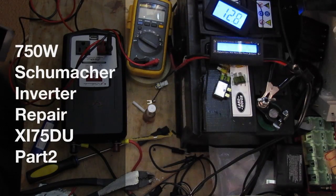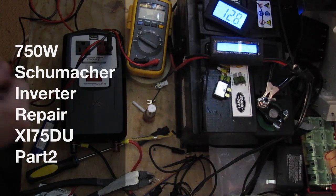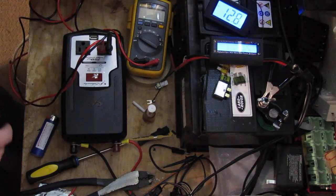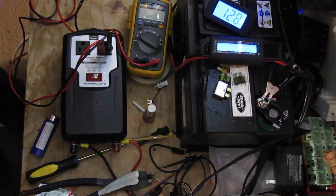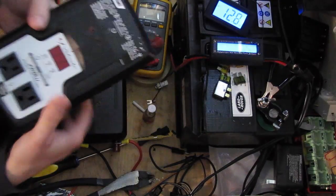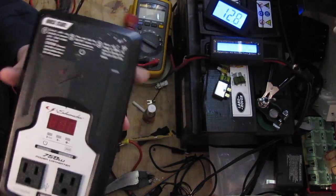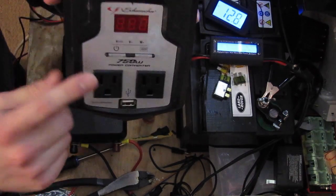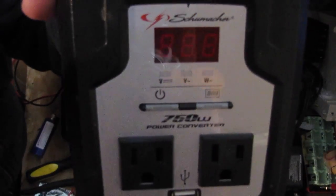Welcome back to another installment of Julian's Random Projects. This is a continued series on, or continuation of, taking a look at these little 750 watt modified sine wave inverters by Schumacher.